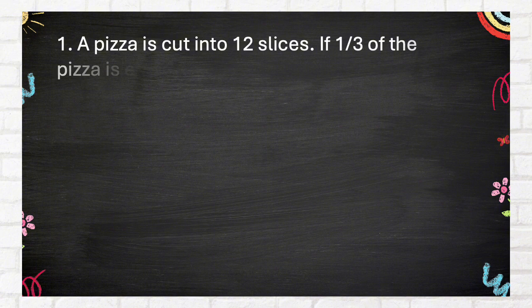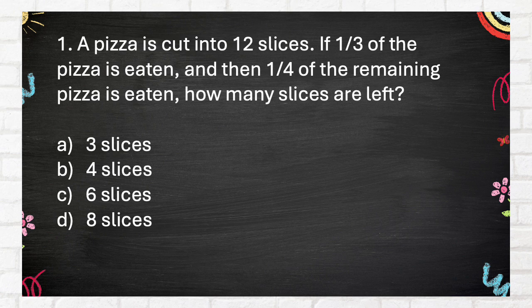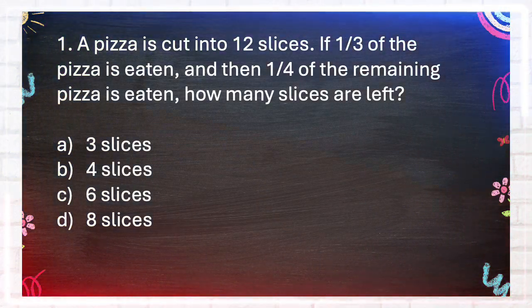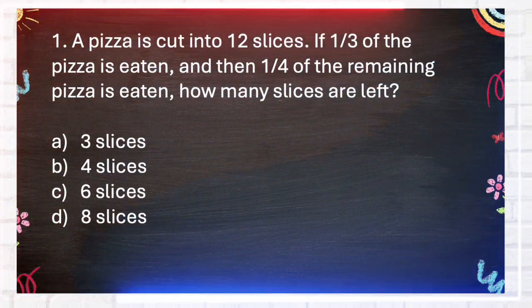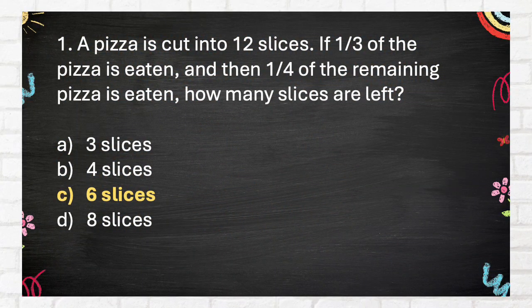Number 1. A pizza is cut into 12 slices. If 1 third of the pizza is eaten, and then 1 quarter of the remaining pizza is eaten, how many slices are left? A. Three slices. B. Four slices. C. Six slices. D. Eight slices. The correct answer is C, six slices.